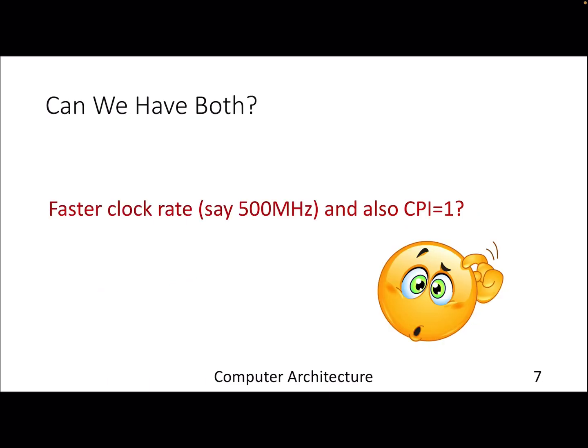What we can do at this moment is try to find out a hybrid approach which can provide both cycles per instruction of one along with faster clock rate. Multi-cycle CPU provides faster clock rate—like we moved from 125 megahertz to 500 megahertz when the clock cycle moved from eight nanoseconds to two nanoseconds—but the CPI goes down, it goes down from one to four.